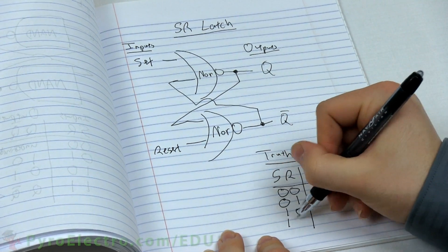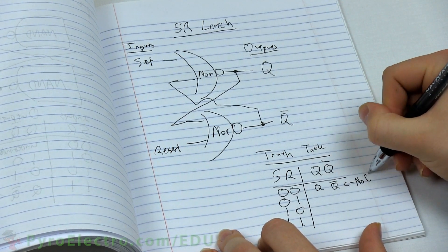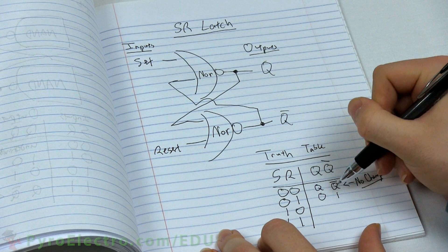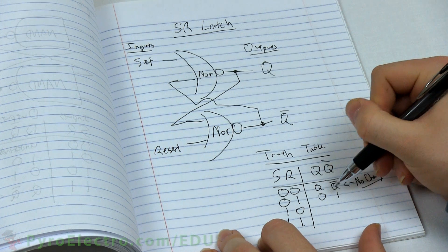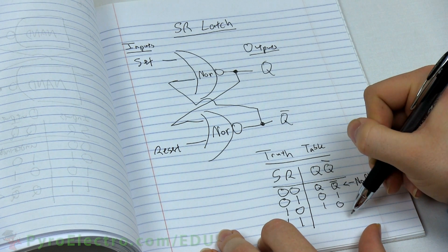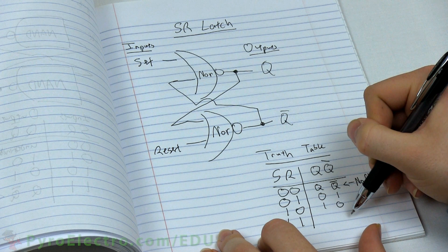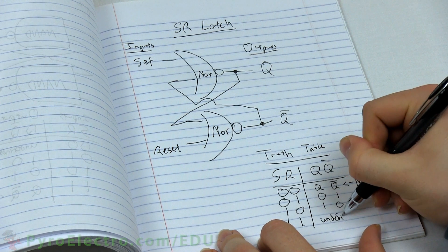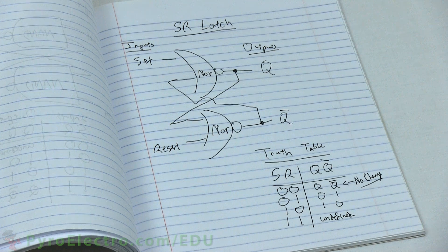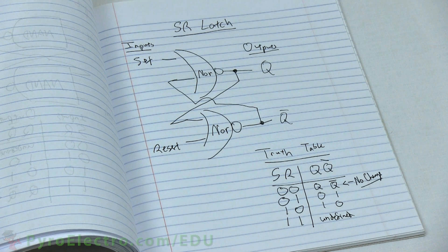When the SR inputs are connected to 00, the output remains the same. When the R signal, or reset, is changed from logic 0 to logic 1, the output signal Q is reset to logic 0. However, when the S signal, or set, is changed from logic 0 to logic 1, the output signal Q is set to logic 1, setting the device. Set and reset should never be at logic 1 at the same time, so we call this an undefined state. So what we have just created is a simple way to latch binary data when a logic 1 is detected at the set pin, and reset it when a logic 1 is detected at the reset pin.